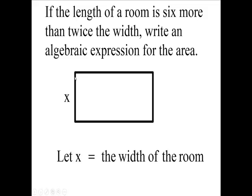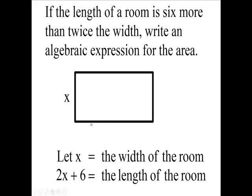This length is x right here. Now it says twice the width, so we're going to have 2x, and then it says 6 more than twice the width. So more than means we're going to add, we're going to add 6, and that's going to equal this side right here. So we're going to label this side 2x plus 6.